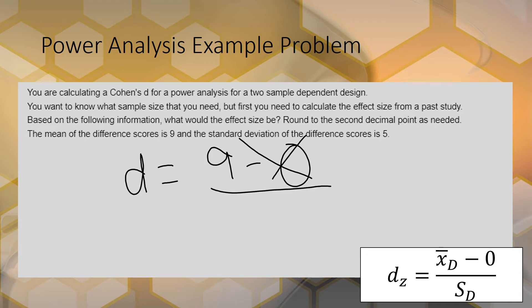But we don't really need to worry about that because it's just subtracting 0, which does nothing. The standard deviation is 5, so we have 9 divided by 5, which is 1.8. And that's it.